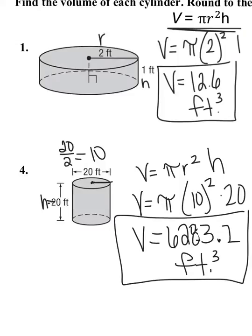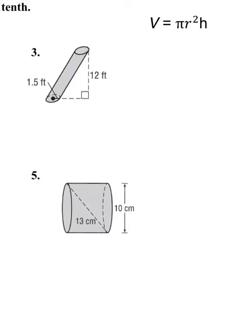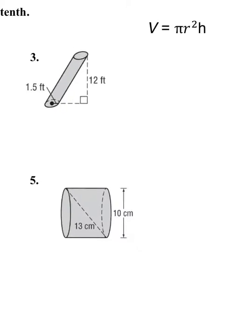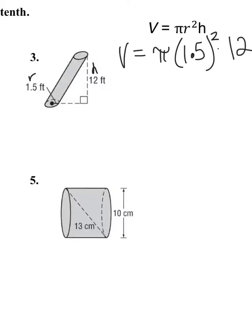We also have a cylinder that looks slanted — oblique — but that doesn't change anything. Volume still equals pi r squared times h. The radius of this circle is 1.5 and the height of this prism is 12. Plugging into the equation: volume equals pi times 1.5 squared times 12. The result is approximately 84.8 feet cubed.